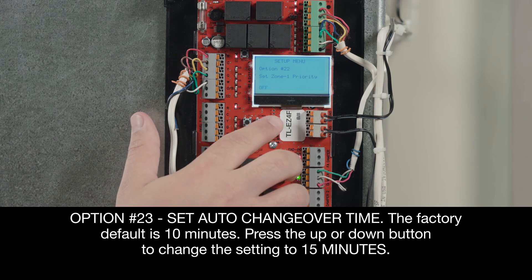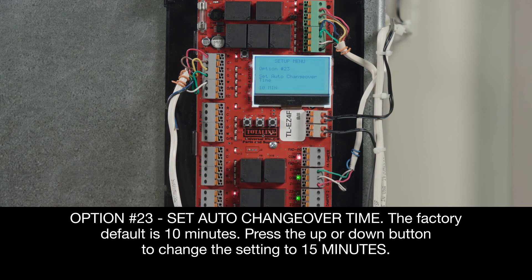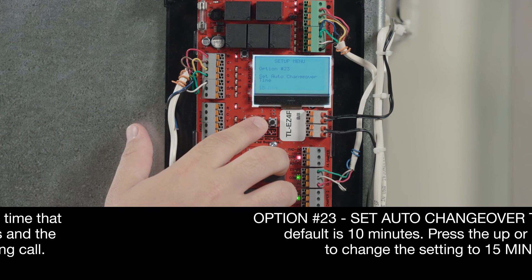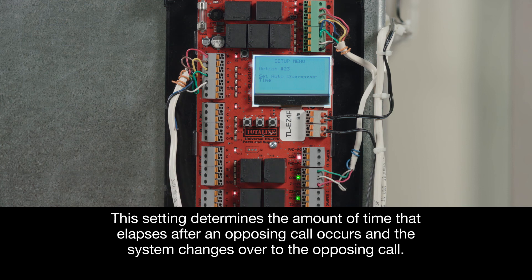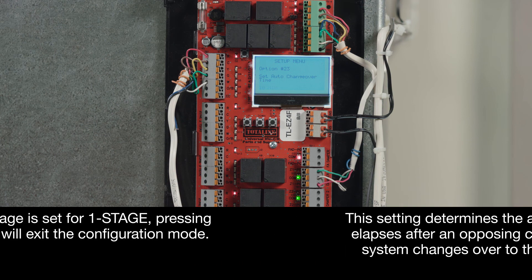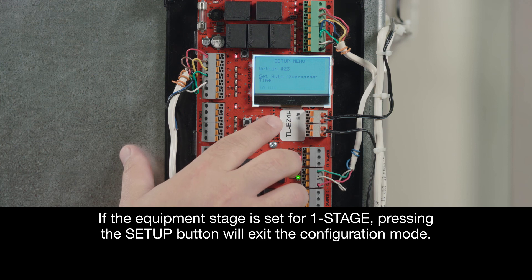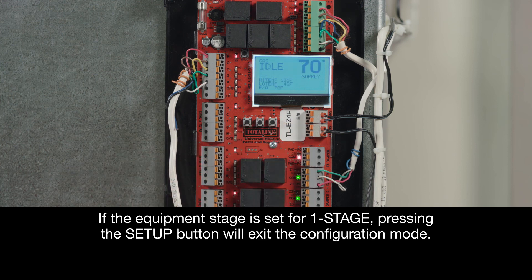And finally, let's go to Option 23, Set Auto Change Over Time. The factory default is 10 minutes. Press the Up or Down button to change the setting to 15 minutes. This setting determines the amount of time that elapses after an opposing call occurs and the system changes over to the opposing call. If the equipment stage is set for 1 stage, pressing the Setup button will exit the configuration mode.